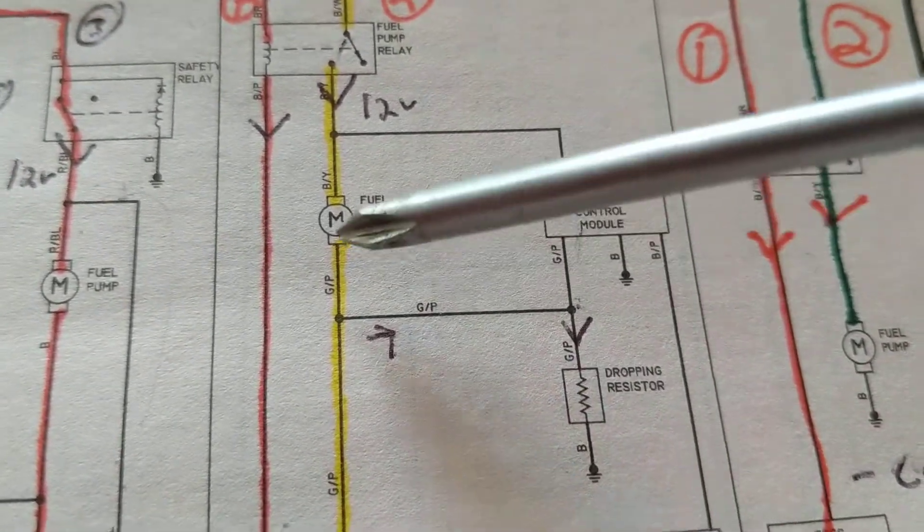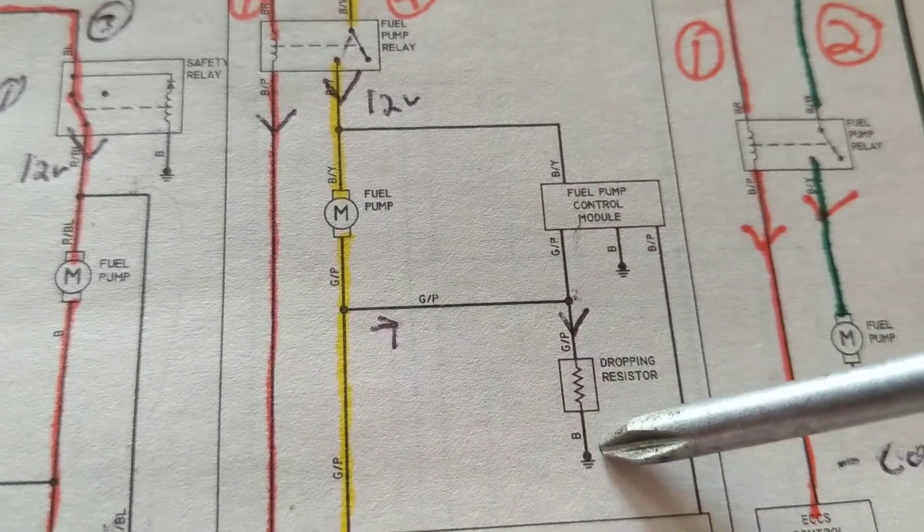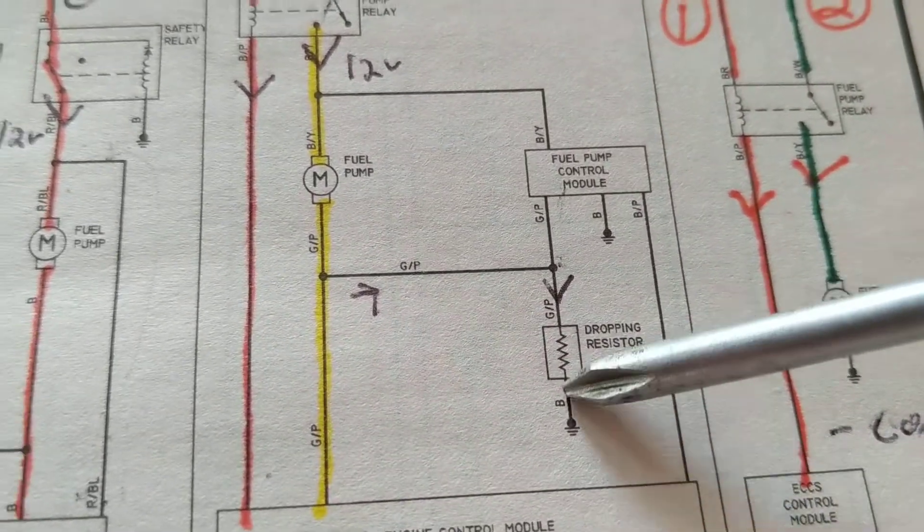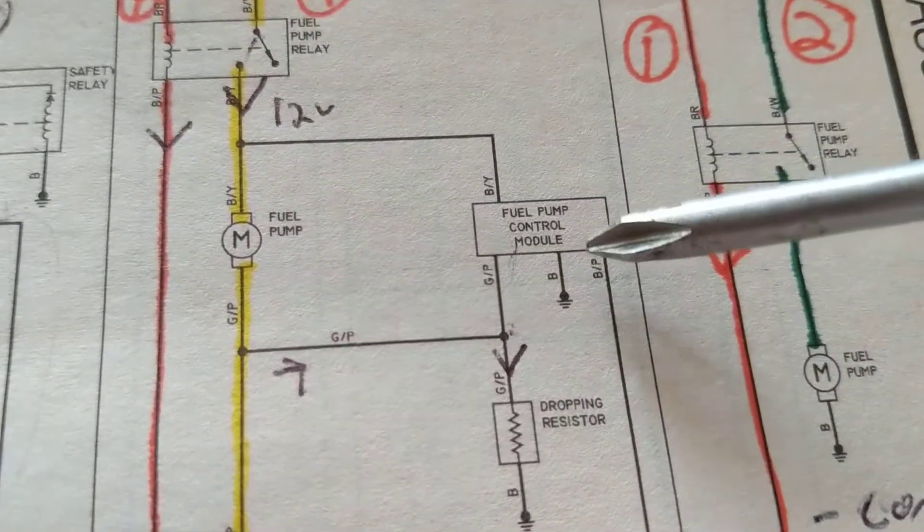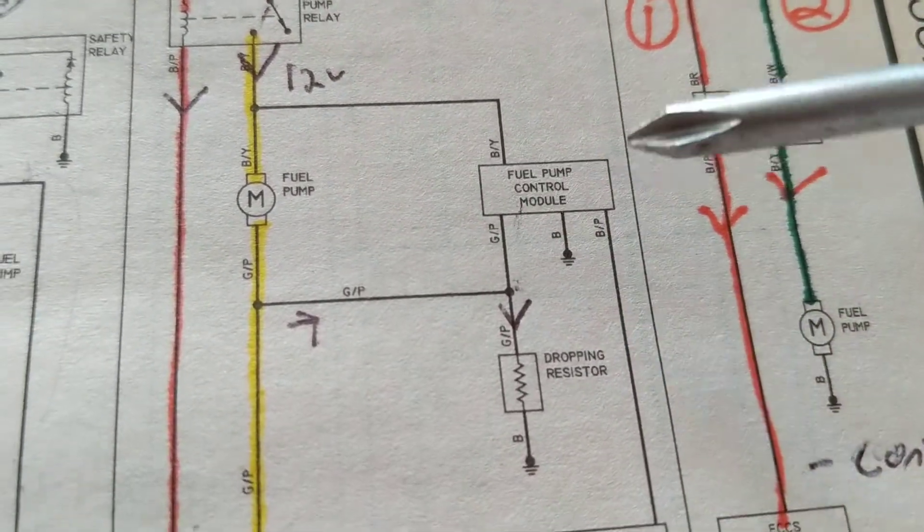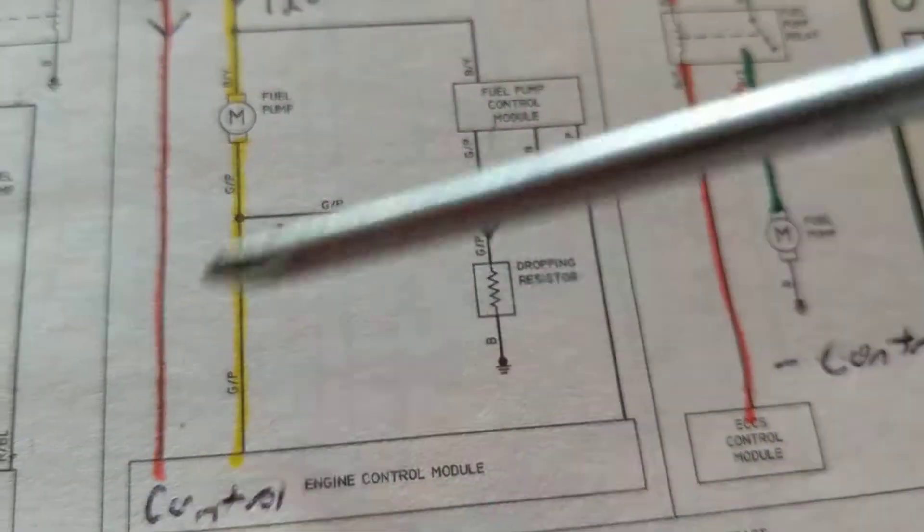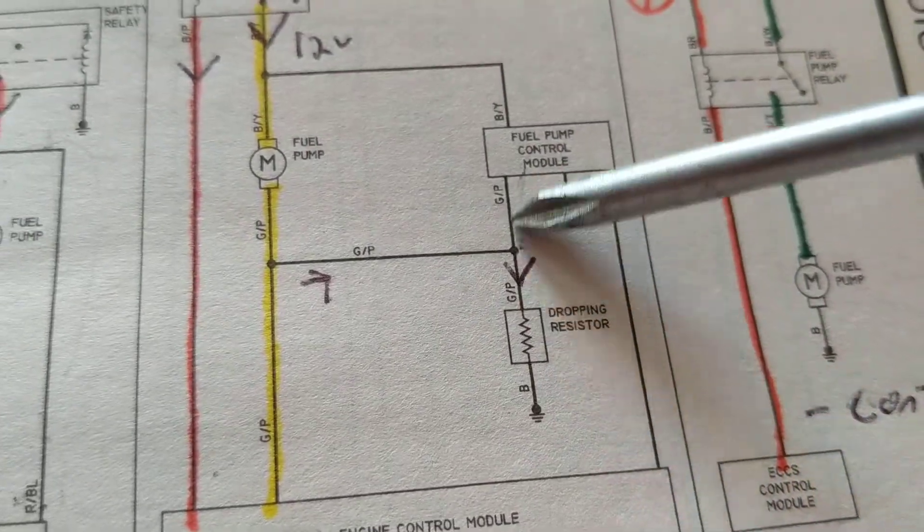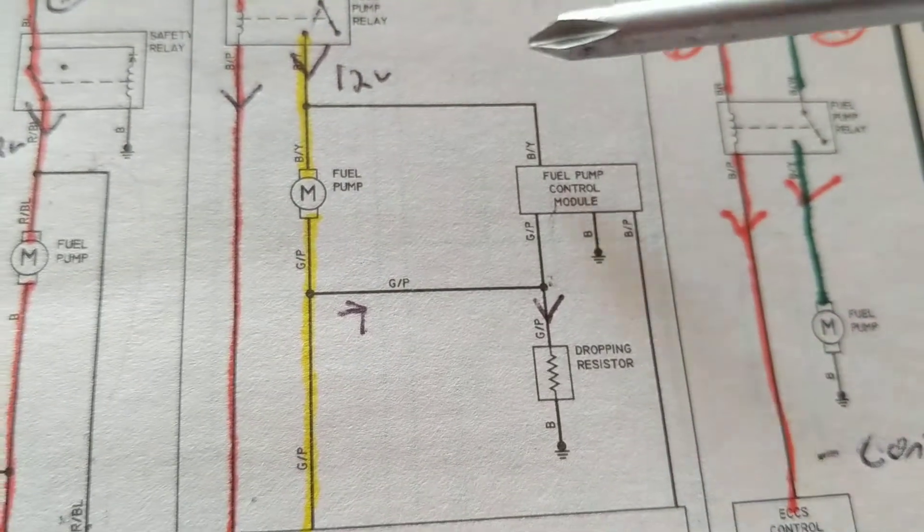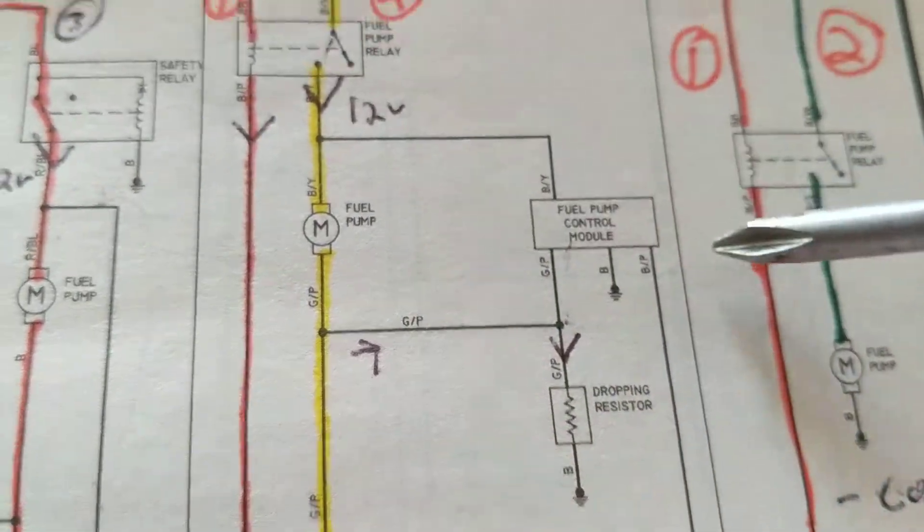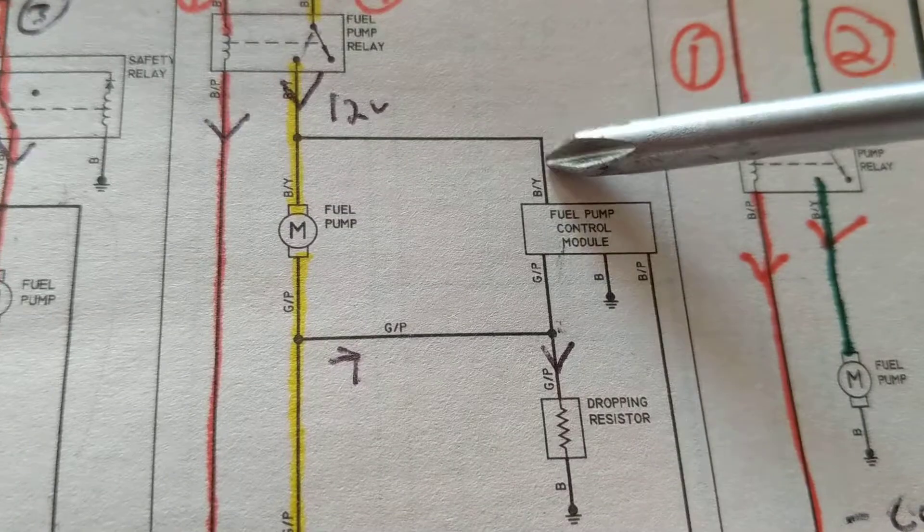That means we've got to drop a voltage across it. If you look over here, fuel pump control module, it's connected here, it's connected to the resistor. And there's another one connected over here, and of course it gets 12 volts over here.